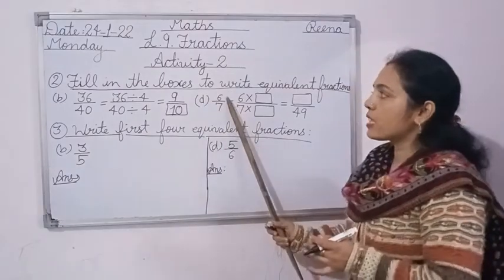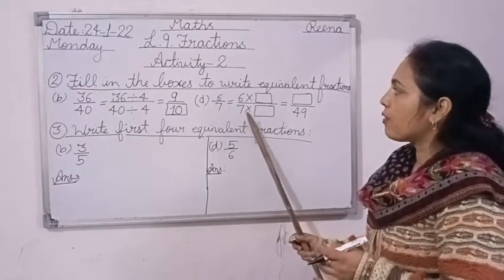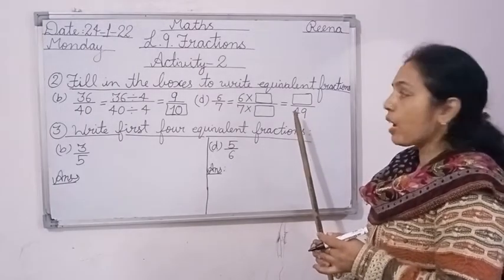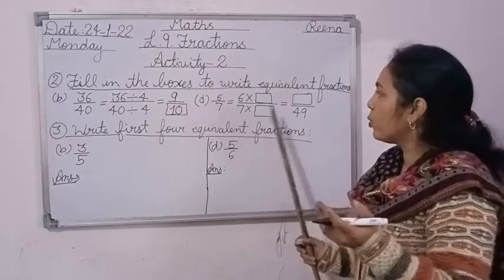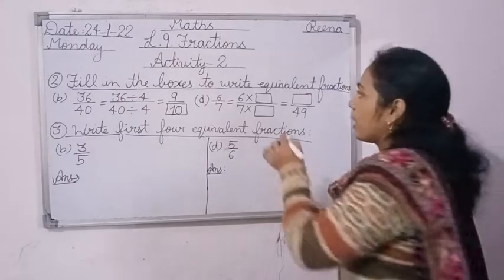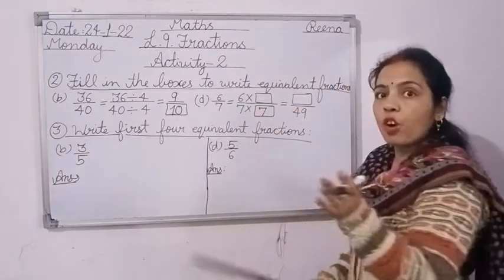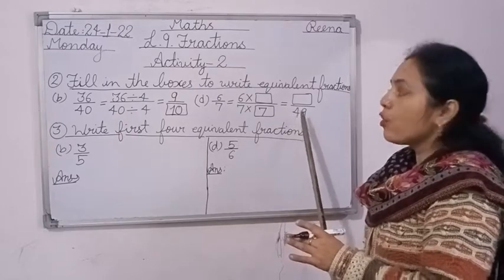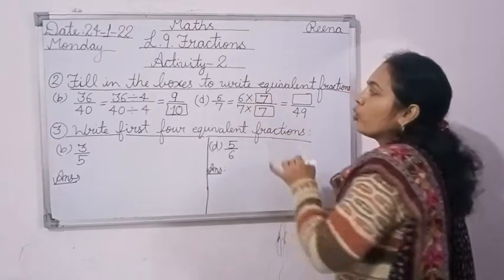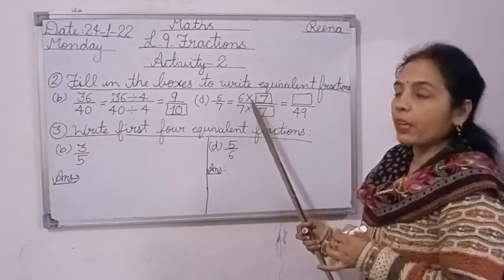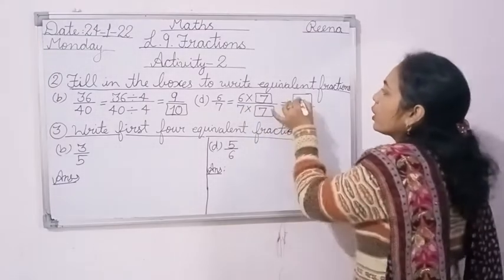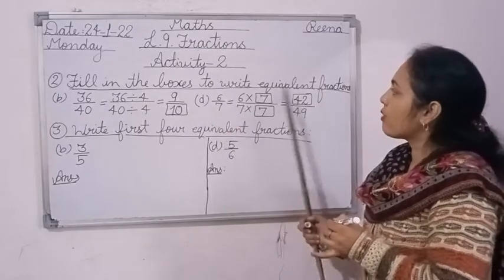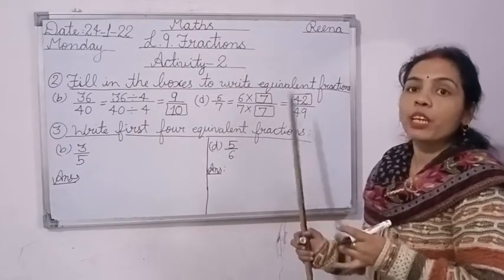In part D you have 6 upon 7 equals 6 multiplied by dash upon 7 multiplied by dash, equals dash upon 49. The denominator given is 49. Table of 7: 7 times 7 is 49, so write 7. For balancing, multiply the numerator by 7 as well: 6 times 7 is 42. So 42 upon 49 is equivalent to 6 upon 7 — both are equivalent fractions.